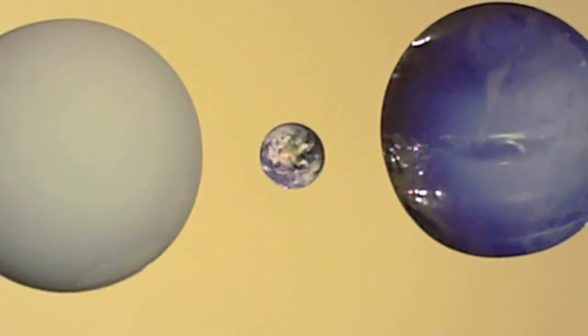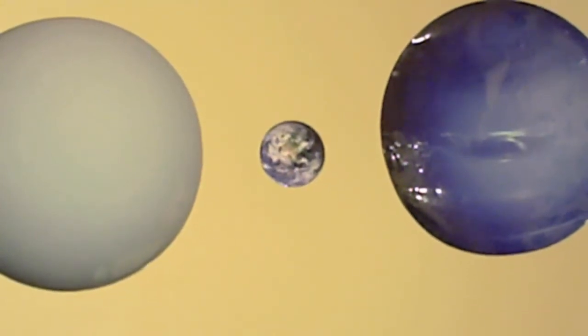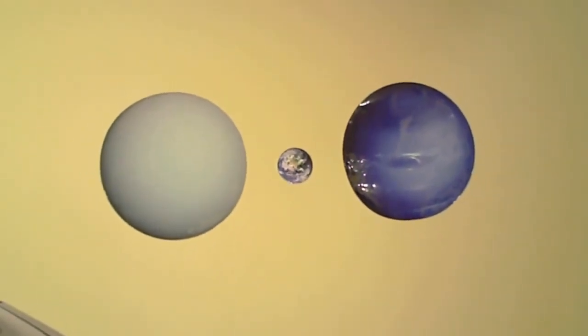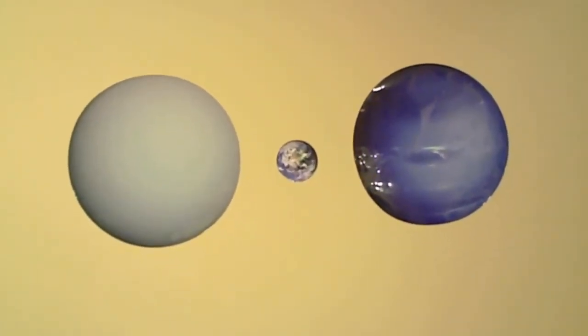Moving on, we see Earth compared to Uranus and Neptune on the far outer reaches of the solar system. Uranus and Neptune are about the same size and, as you can see, they're significantly larger than Earth. They're both gas giants, though the smallest of the gas giants.